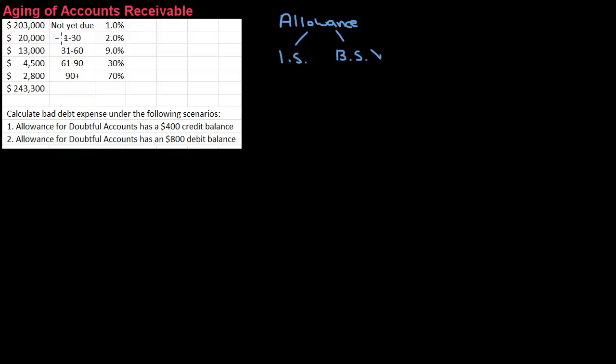So when you're recording bad debt, your journal entry is always the same. It's going to be bad debt expense and allowance for doubtful accounts. And I'm going to put DA for doubtful accounts. Typically, bad debt expense is going to be your debit, and allowance for doubtful accounts is going to be your credit. But these are the two accounts that are involved in the journal entry.